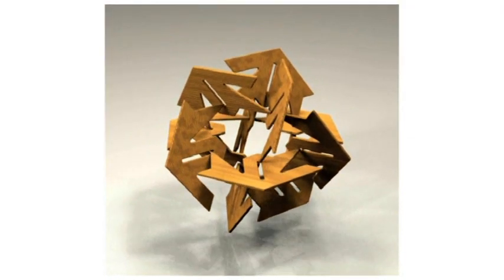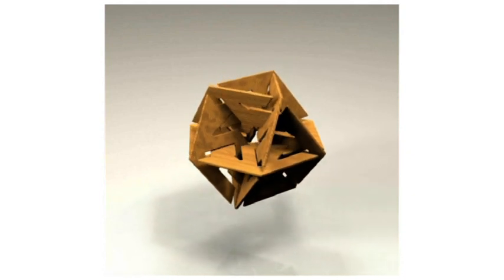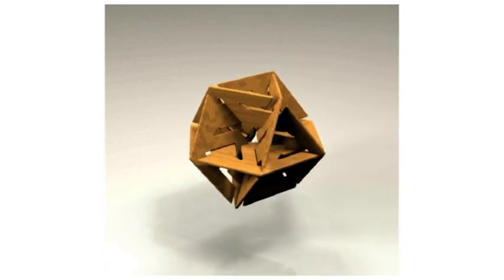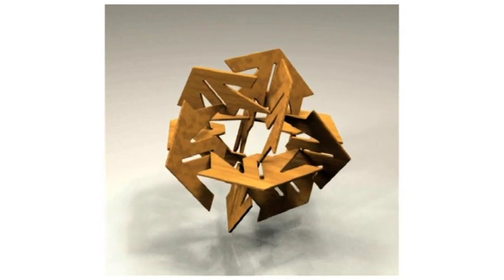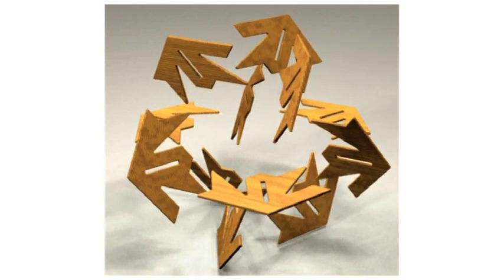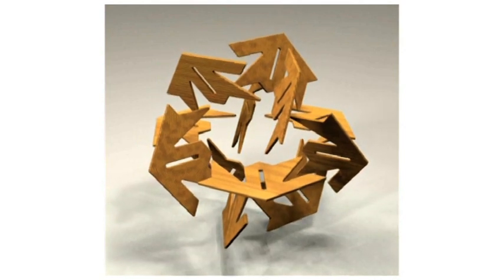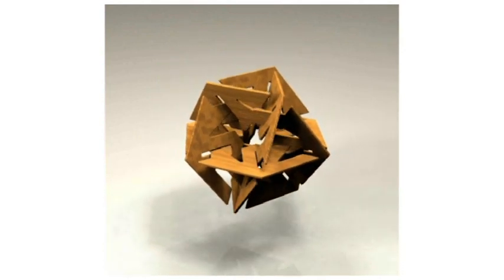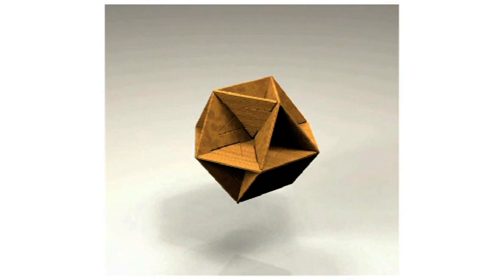So with twelve identical parts. You can by just sliding them together make a nice construction like this. The total shape is a cube octahedron. So once it's slid together there's no way to take it apart again.